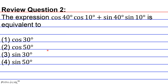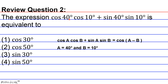You can notice that this expression — cosine of 40 degrees times cosine of 10 degrees plus sine of 40 degrees times sine of 10 degrees — is of the form cosine A times cosine B plus sine A times sine B. You should know that this is equivalent to the cosine of A minus B. We let A equal 40 degrees and B equal 10 degrees, so the cosine of A minus B equals the cosine of 40 minus 10, which is the cosine of 30 degrees. So our correct answer choice is answer choice 1, the cosine of 30 degrees.